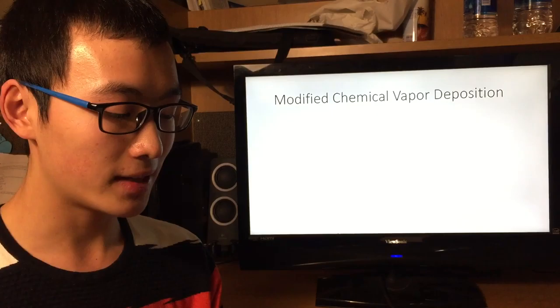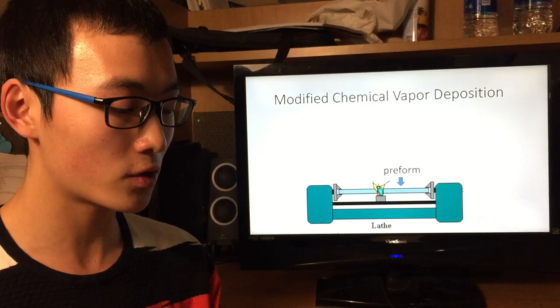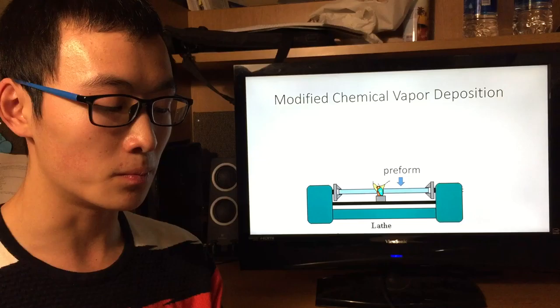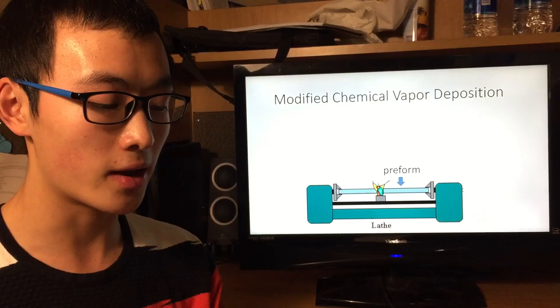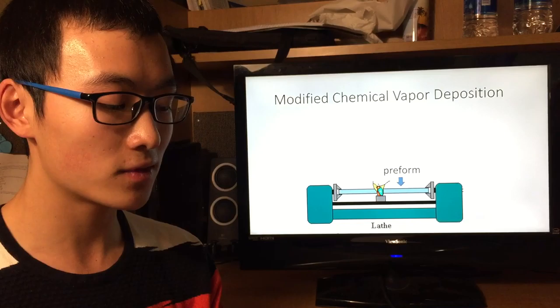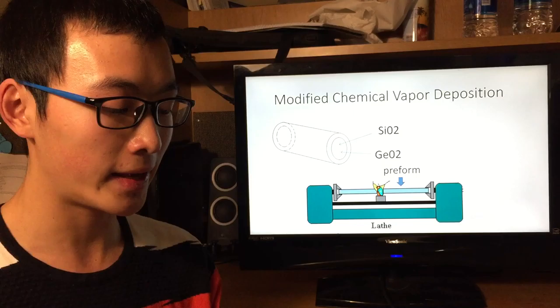The bubbling chemicals produce gas that is conducted into the hollow rotating tube made of cylindrical silica or quartz. As the lathe turns, a torch is moved up and down the rotating tube resulting in very high temperatures and causing the gas to react with oxygen to form silicon dioxide and germanium dioxide.